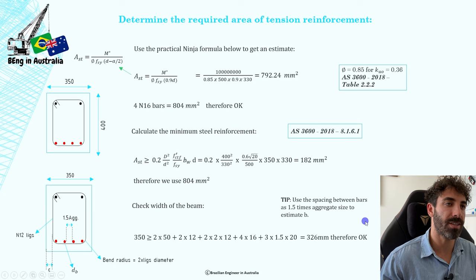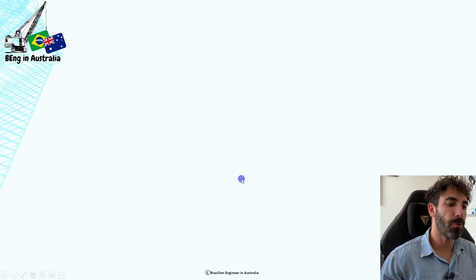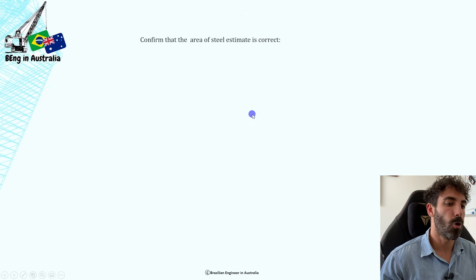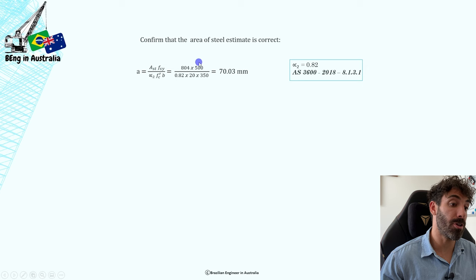Remember that we said that we will double check our results and make sure phi mu is greater than 100 kilonewton meters. We're going to do this now. Now we have an area of steel that we can calculate 'a'. Remember before we didn't have 'a', that's why we had to use the ninja formula. But now we have the area of steel and we can calculate 'a'. We're just going to use this formula here to calculate 'a', and we get that a is 70.03 millimeters.